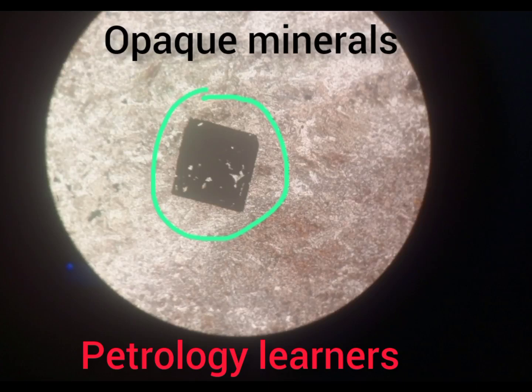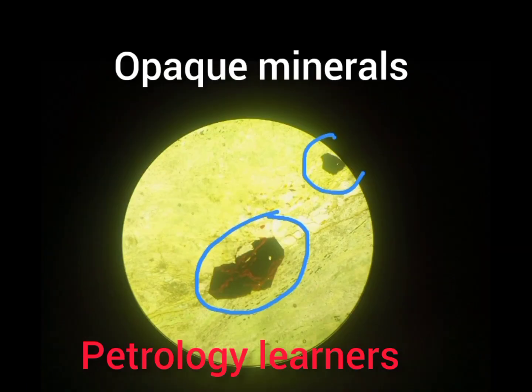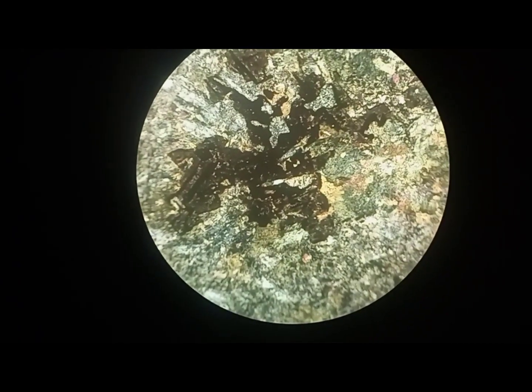Today we are going to discuss a very important group of minerals known as opaque minerals — how we identify opaque minerals in thin section. In thin section, the minerals that appear black in both XPL and PPL mode are known as opaque minerals.